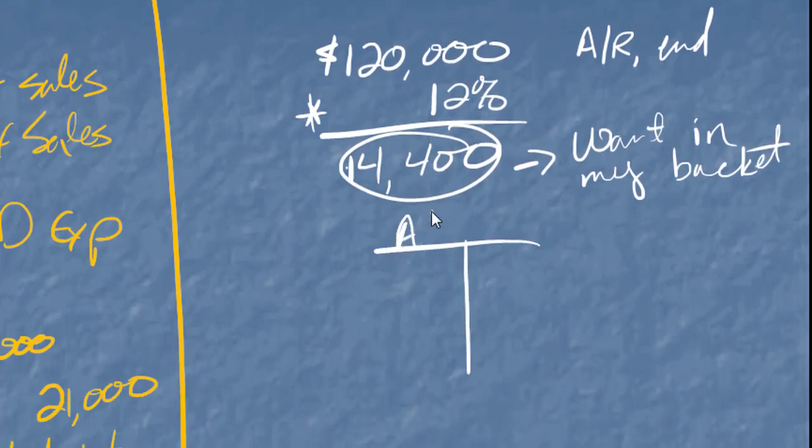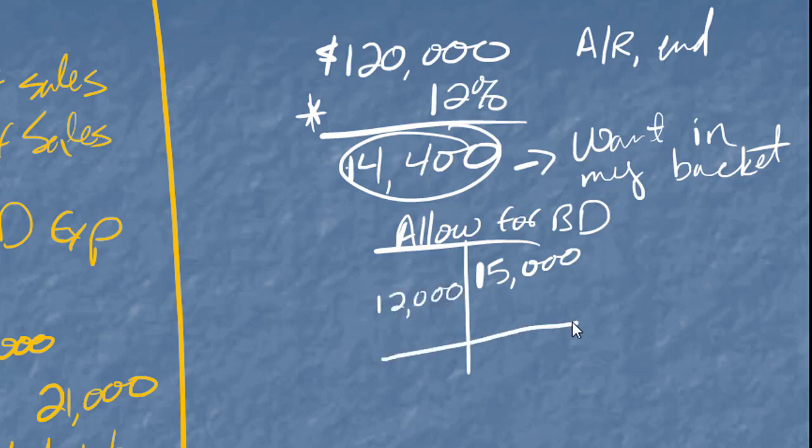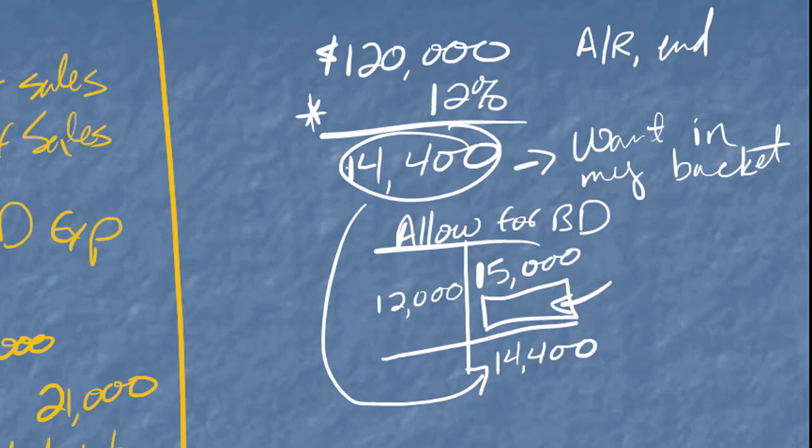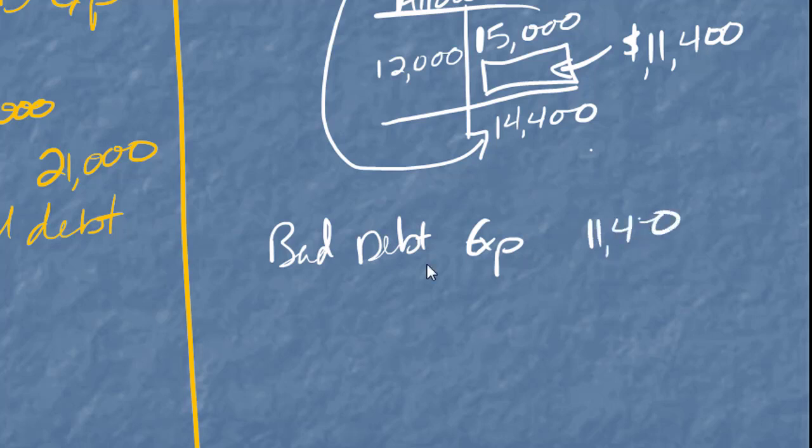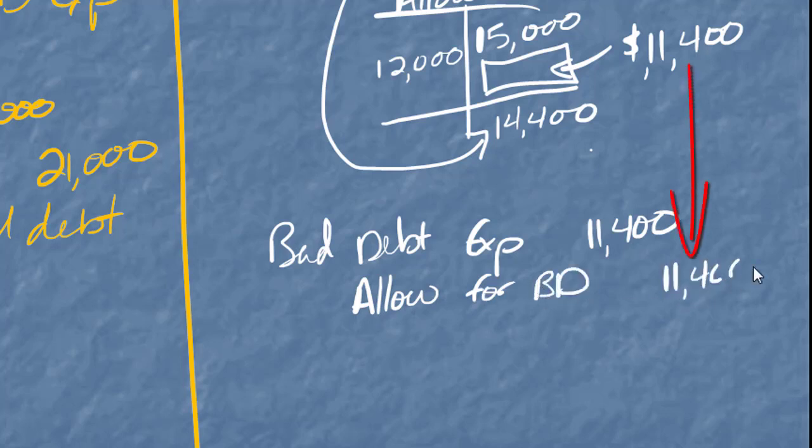So in other words, here's my allowance for bad debt. I started with $15,000. I wrote off $12,000. I want to end up with $14,400. So I have to figure out what the journal entry is that gets me to that $14,400 as my ending balance. If we subtract that, we end up with a journal entry of $11,400. That will get us to that desired ending balance of $14,400. And now I can do my journal entry. Bad debt expense, $11,400. I'll credit my allowance for bad debt. That same amount. This is an adjusting entry for bad debt.